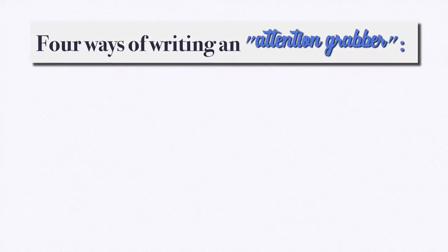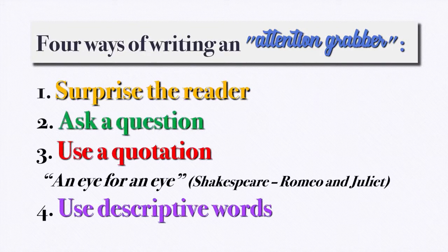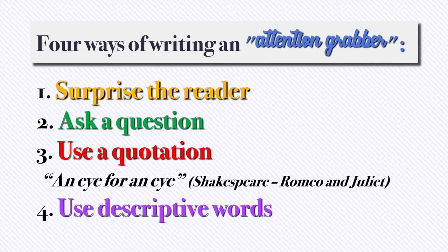There are four ways of writing an attention grabber. The first one is surprise the reader. The second one is ask a question. The third one is use a quotation — for example, an eye for an eye, Shakespeare in Romeo and Juliet. Or the fourth one, use descriptive words.